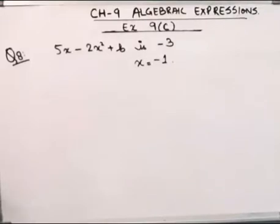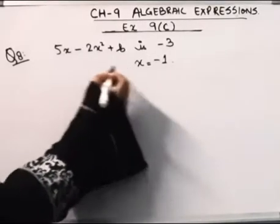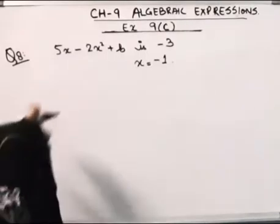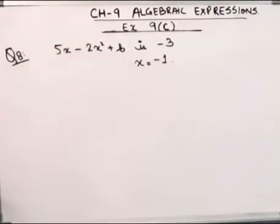Hello everybody, today we will be doing question number 8 from exercise 9c. The question is: what should be the value of b if I put x is equal to -1 and the value of this expression is -3?